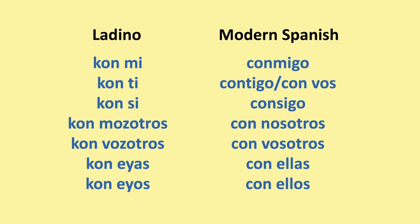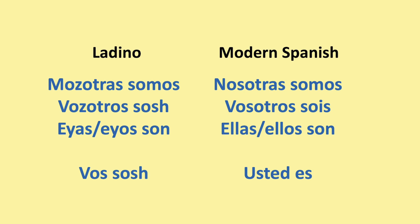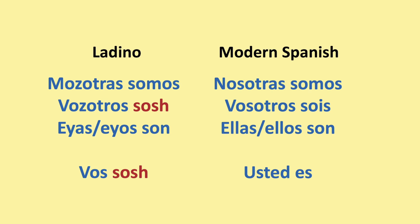Now let's look at the verb to be (ser) and to have (tener). In Ladino for 'to be': yo so (I am), tu sos (you are), ella es (she is), el es (he is). Tu and vos coexisted in Spain, and here you can see how Ladino kept the vos construction — you don't say 'tu eres' in Ladino. We are: mozotras/mozotros somos. You plural are: vozotras/vozotros sos. They are: ellas son / ellos son. For vos, you use everything that is vosotros, just change the pronoun — so 'vos sos'. In Spanish you use the third person singular: usted es.